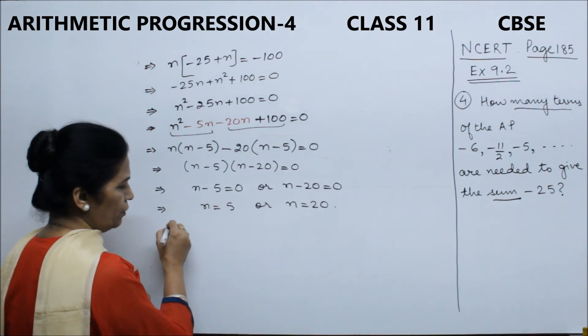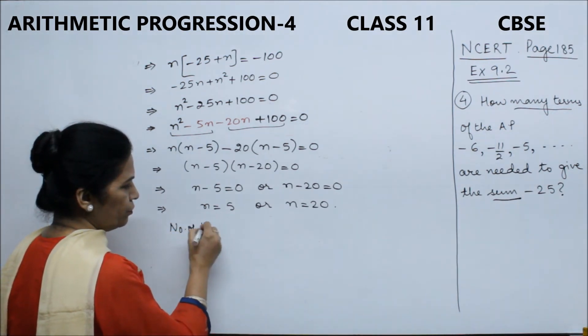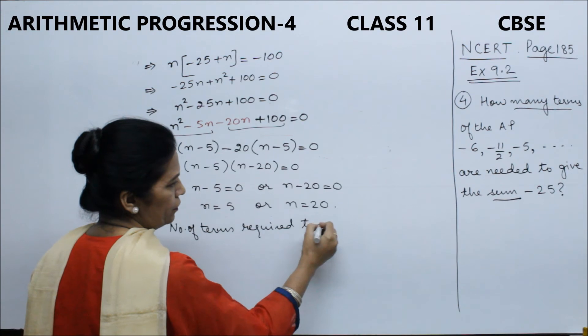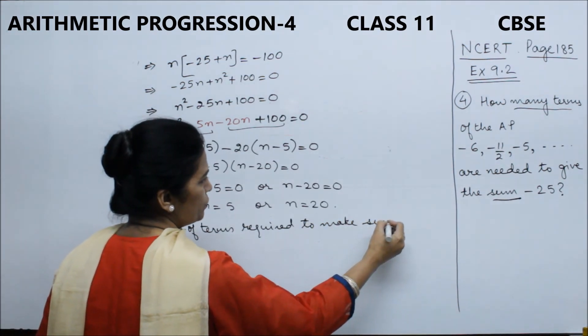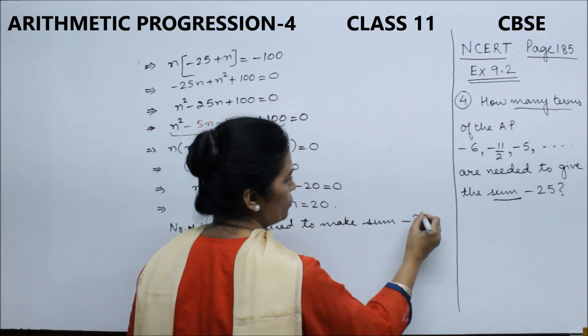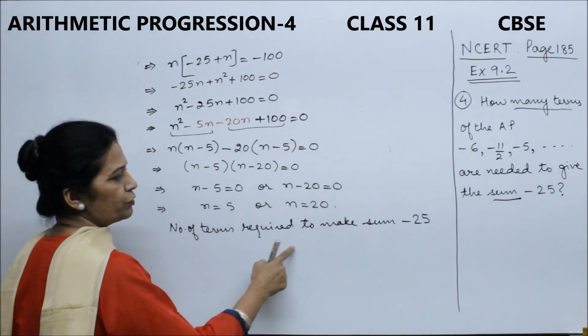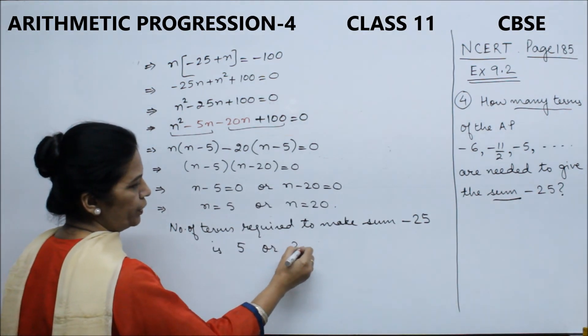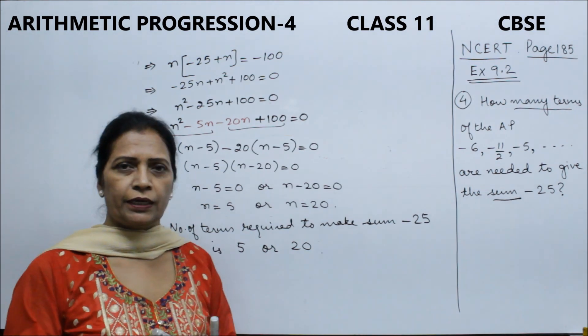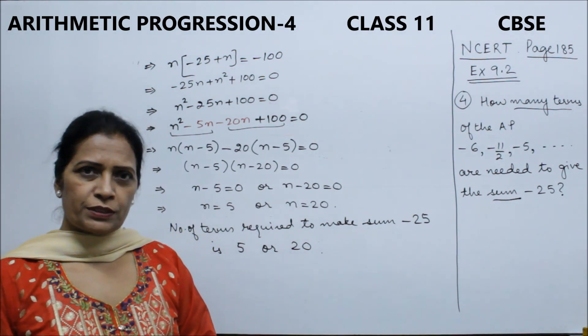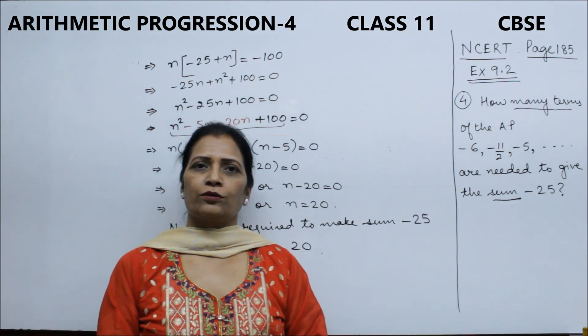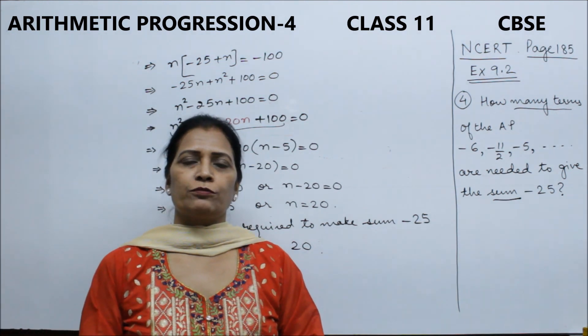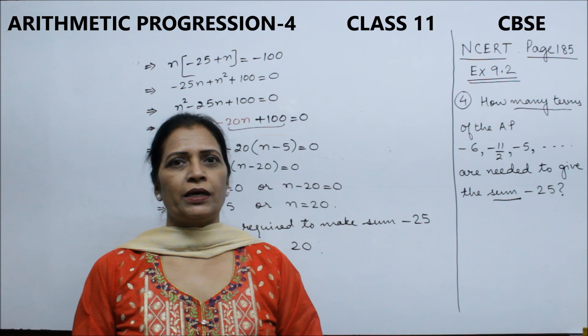Therefore, the number of terms required to make sum -25 is either 5 or 20. Both are our answers. If you liked this video, please like and subscribe to my channel so that whenever I upload a new video, you get the information immediately. Okay students, bye and God bless.